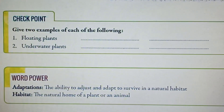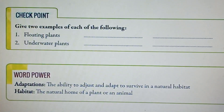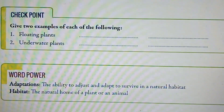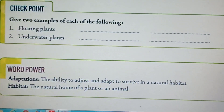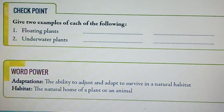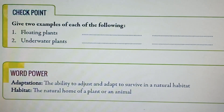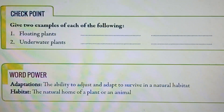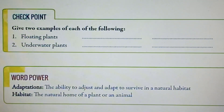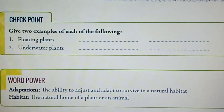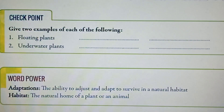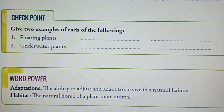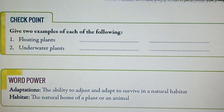Hello students. Today I am going to tell the answers of checkpoint 2. The question is: give two examples of each of the following. Number 1, floating plants. As you know, duck weed, water lettuce and water hyacinth are the examples of floating plants, so you can write any two of them.